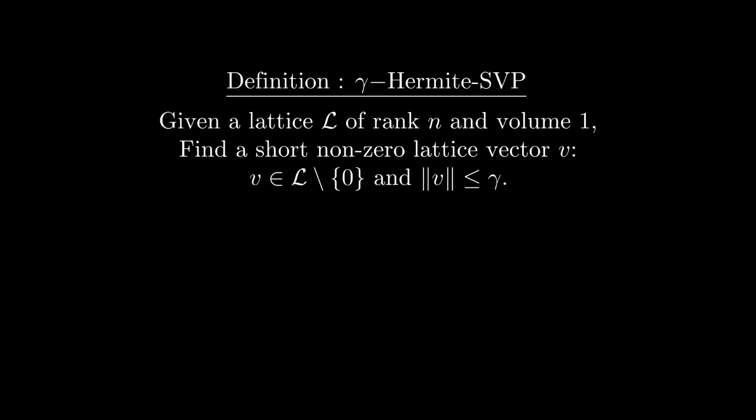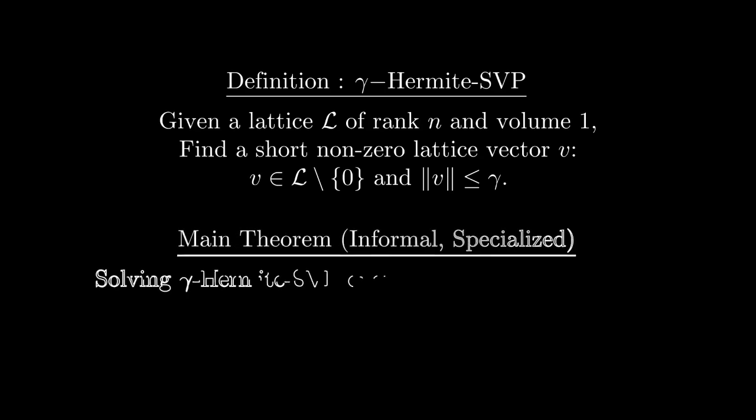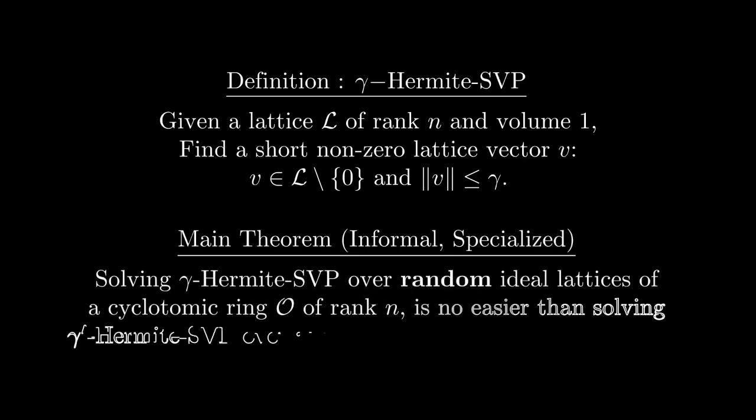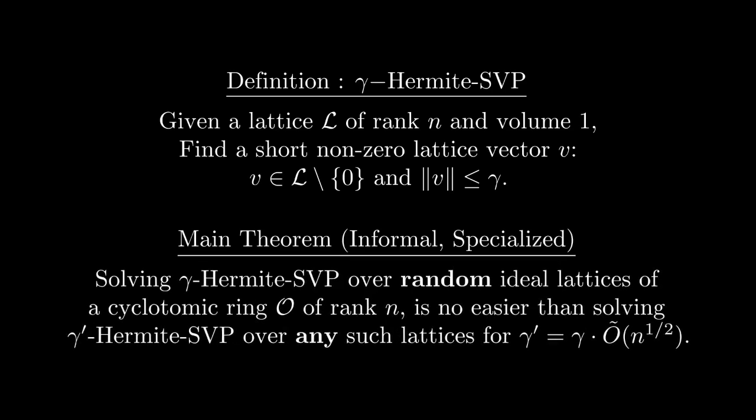So in our context the Hermite SVP problem reads as follows. Given a lattice of volume 1, find a vector shorter than gamma, where gamma is a positive real number. Our main result, specialized to a cyclotomic ring of rank N reads as follows. If you can solve gamma Hermite SVP over random ideal lattices, you can also solve gamma prime Hermite SVP over any ideal lattice, but with the cost of a small blow-up factor.